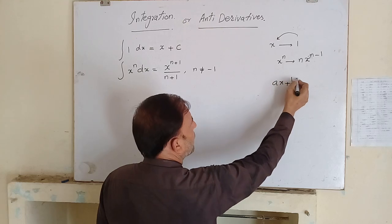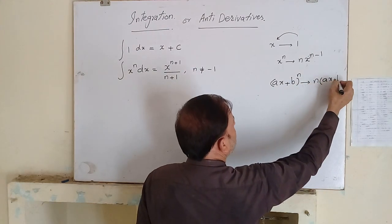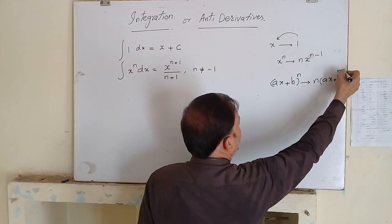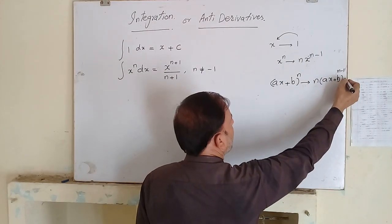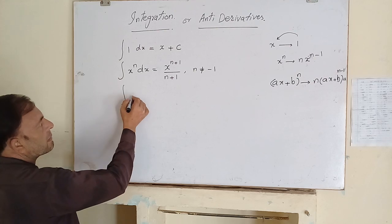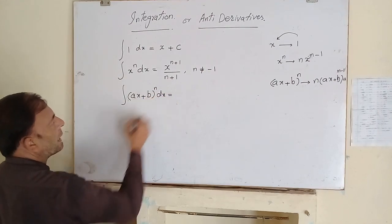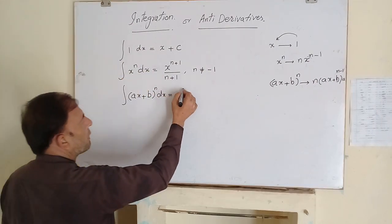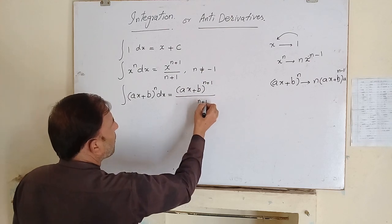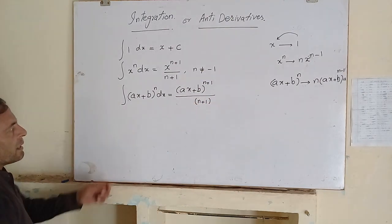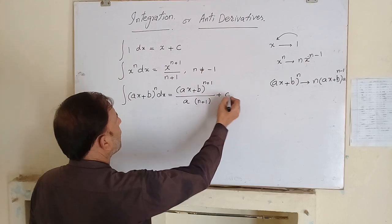If we differentiate (ax + b) power n, its derivative is n times a times (ax + b) power n minus 1, where we multiply by the derivative of the inner expression, which is a. So if we have to integrate (ax + b) power n, we add 1 to the power, divide by the new power, and also divide by a, the derivative of (ax + b), plus the constant of integration.